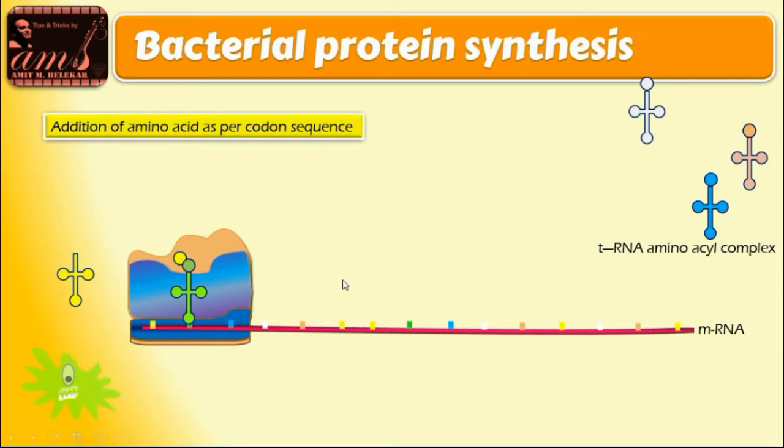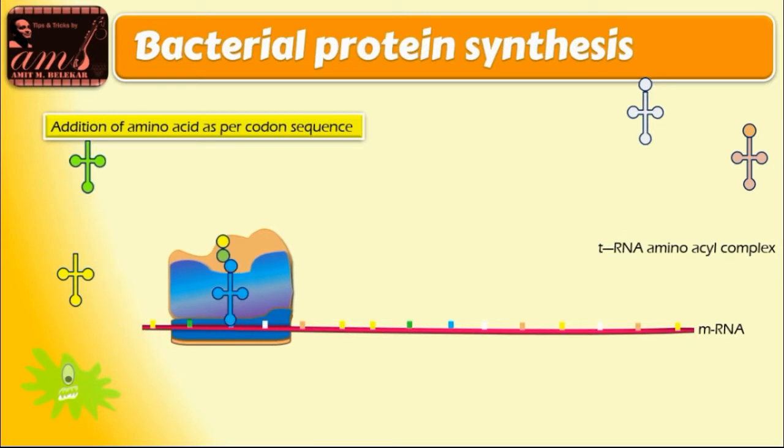Thus, a long chain of amino acids forms, which is the primary structure of protein. Now we have to discuss the mechanism of action of streptomycin.